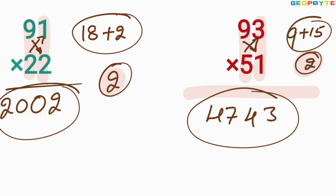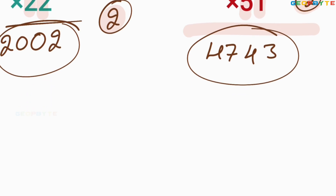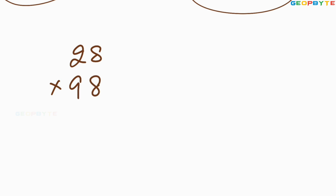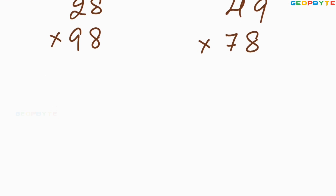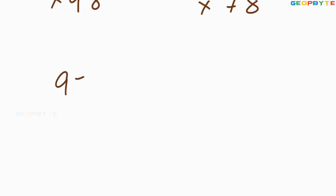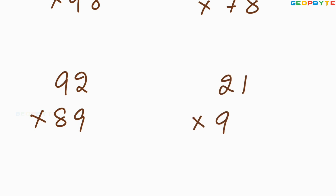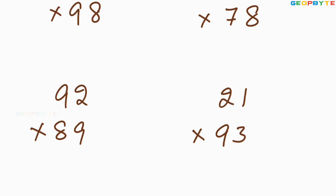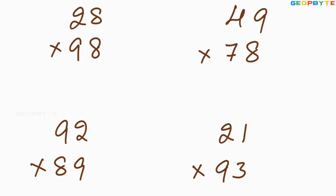I hope all of you clearly understood. Now I am going to give some practice problems for you. Try to practice these problems, my dear friends: 28 multiplied by 98, 49 multiplied by 78, 92 multiplied by 89, and 21 multiplied by 93. While you are practicing, if you find any difficulty, please send your doubts to Geobyte. Definitely, I will answer within one day.